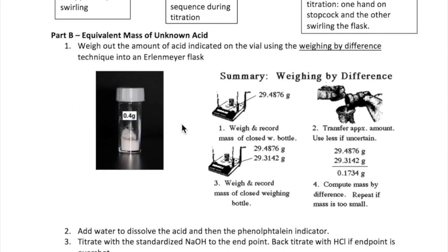Now let's discuss the experiment in Part B. First, you will get a vial with the solid unknown acid from your instructor. On the vial, there will be two numbers. One is a code for the unknown, which you must write down, and the other is a mass, as shown in this picture, which corresponds to how much acid you have to weigh out.